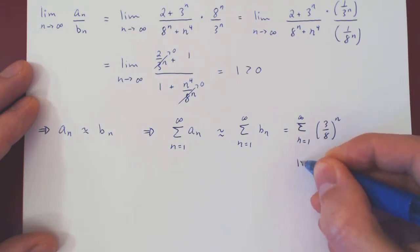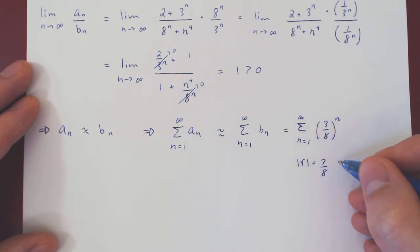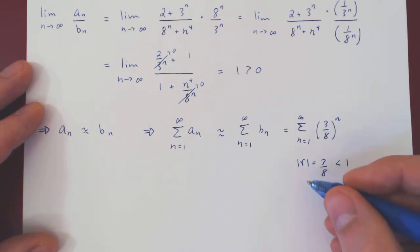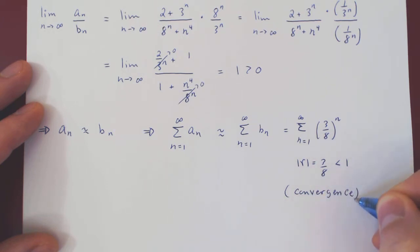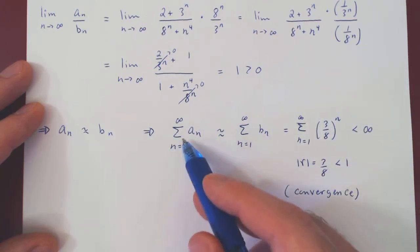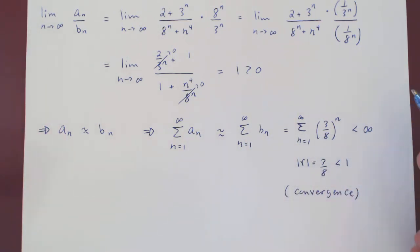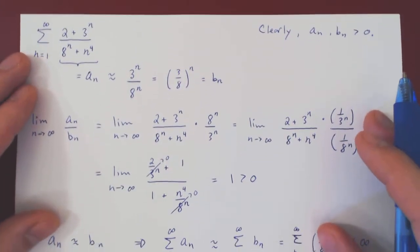So the absolute value of r is 3 over 8. Well, r is 3 over 8, so the absolute value does nothing. But the key point is this is strictly less than 1. So this series is a convergent geometric series. We have convergence. This is nothing but a real number, therefore it's finite. So the original series of positive terms is finite, therefore converges by the limit comparison test.